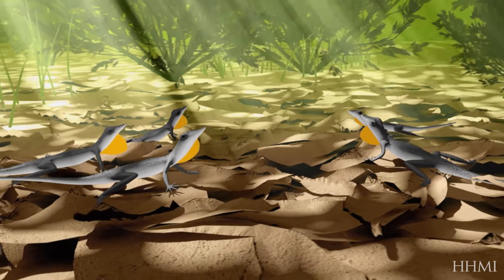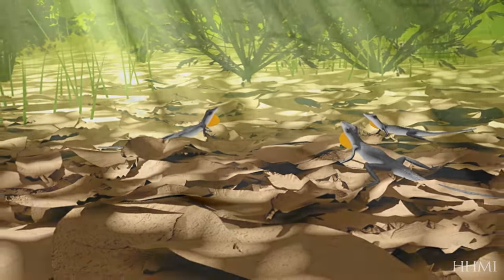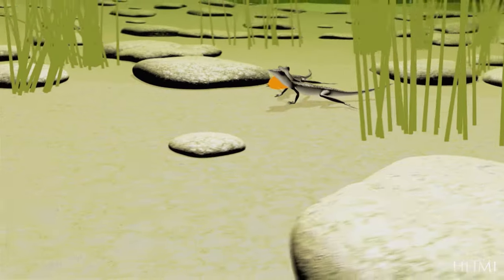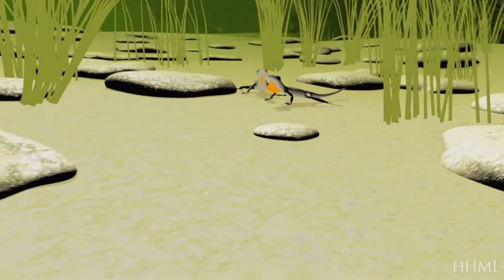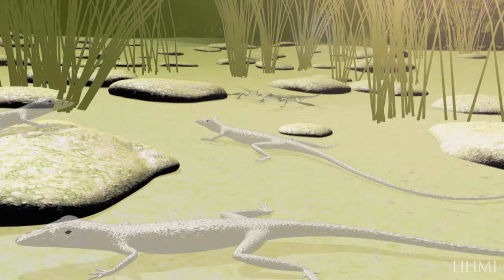Now suppose that a population of these lizards ended up in an area that was much more open and sunnier. In that case, a light-colored dewlap isn't very effective. So over time, the population would evolve by natural selection to have darker dewlaps.